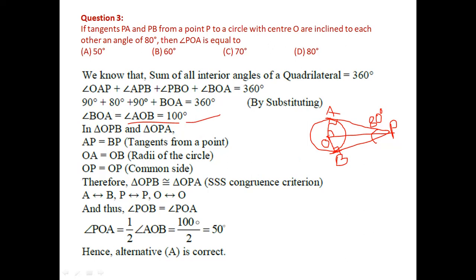Now compare triangles OPB and OPA. Both have 90-degree angles. OA = OB as radii, AP = BP as tangents from an external point, and OP is the common side. By SSS congruence, the triangles are congruent. Therefore angle POB = angle POA. Since AOB = 100°, each half is 50°, so angle POA = 50 degrees.